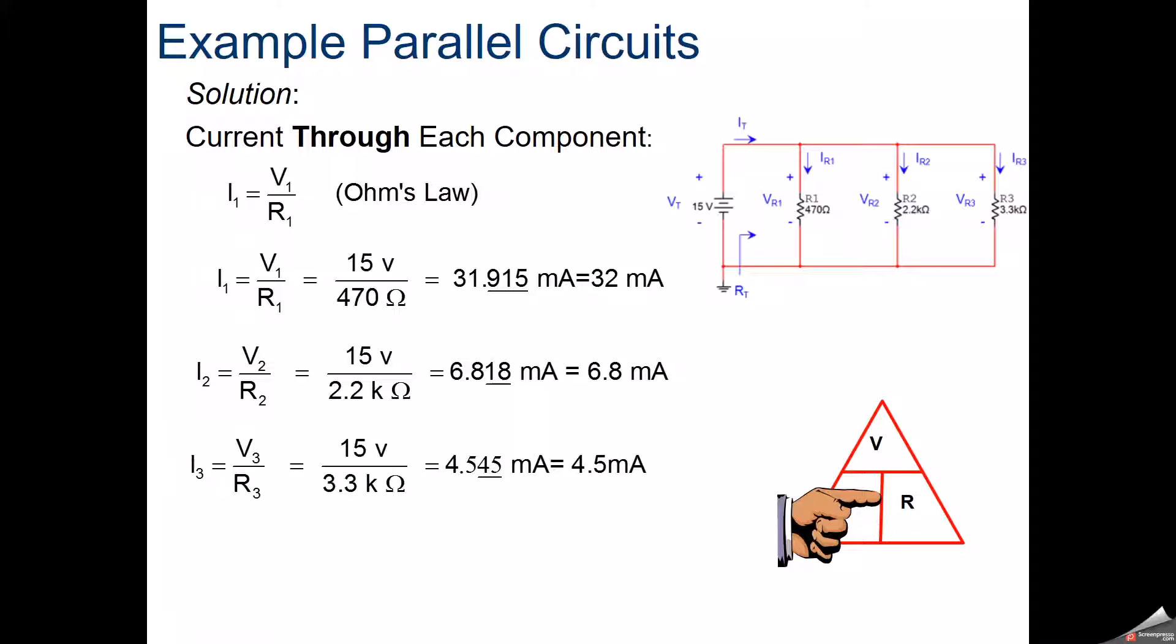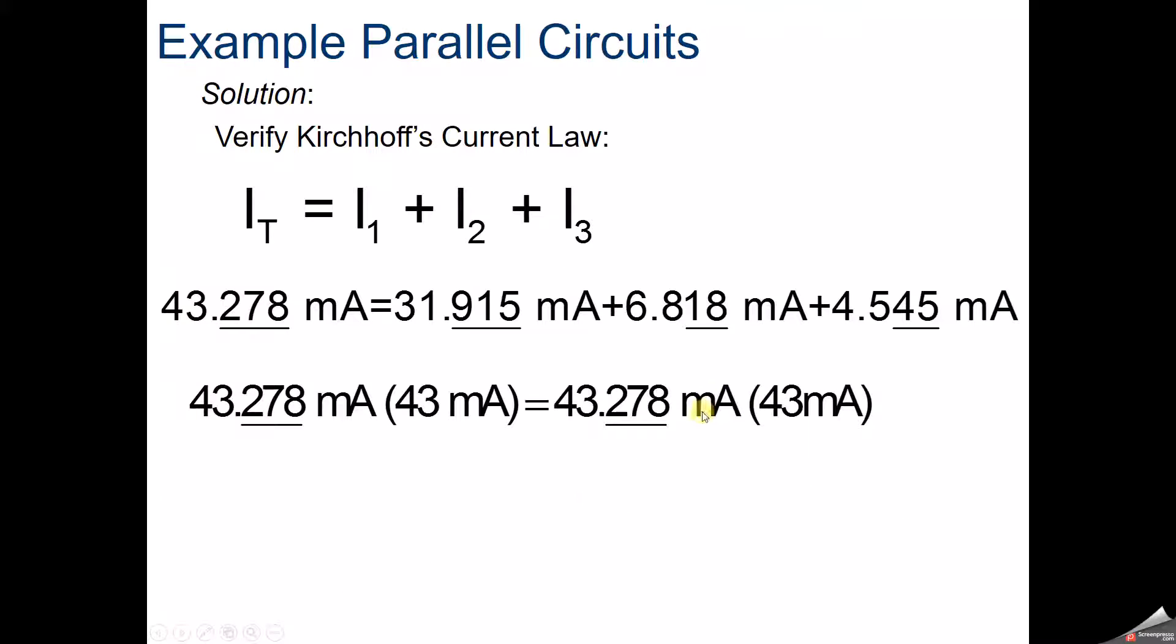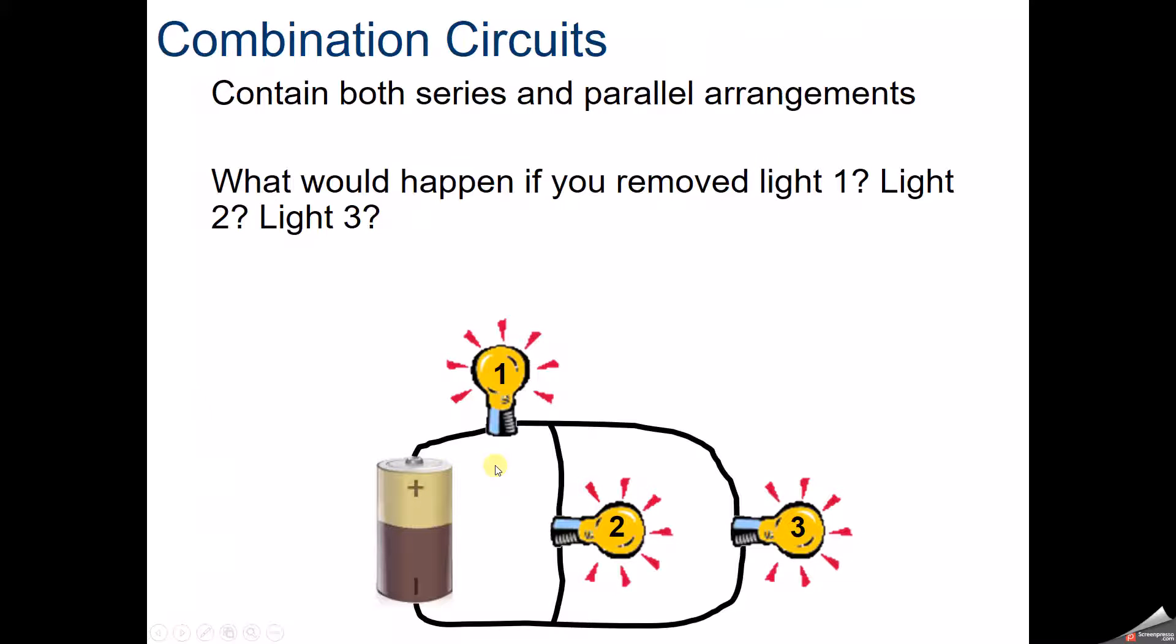So what can we do to check to make sure we've got that total answer? Are all those individual answers correct? We take the sum of all of these, should be able to equal that total current. How do we calculate the total current? Total voltage divided by total resistance. So total voltage divided by total resistance gave us a total current of 43. Adding 32, 6.8, 4.5 gets us pretty darn close to that 43 milliamps that we're looking for. So using some sig figs and some rounding, it's close enough for us. We can say our work and calculations are correct.